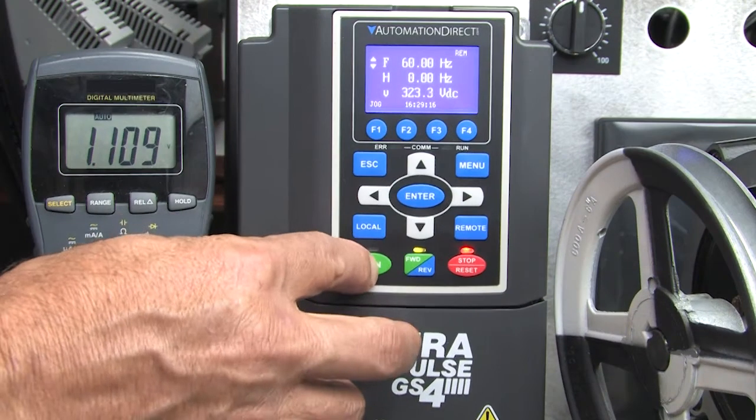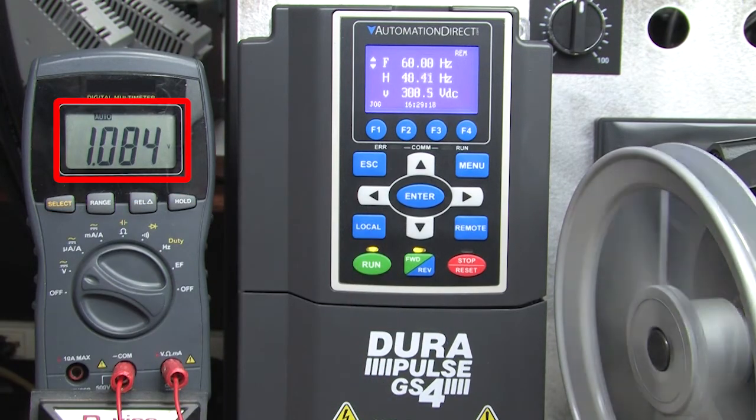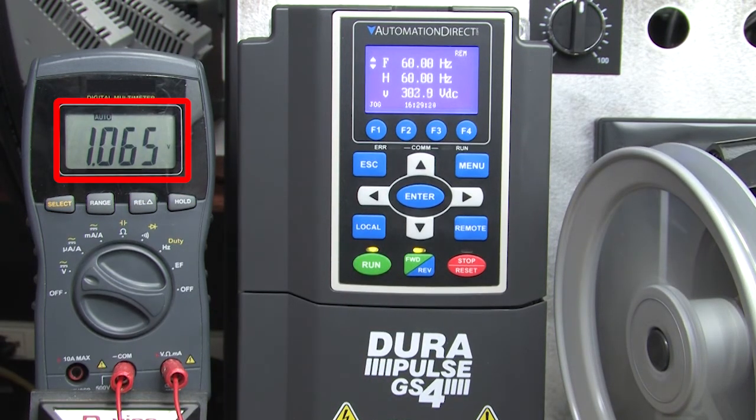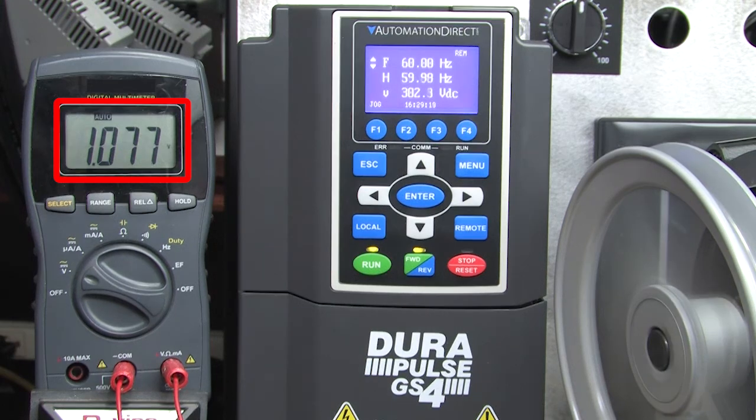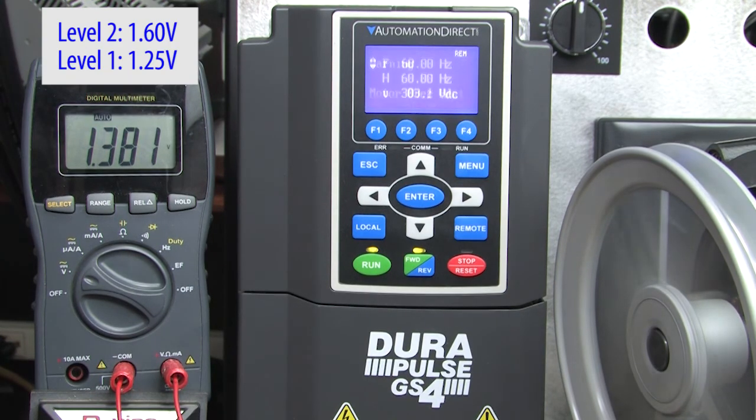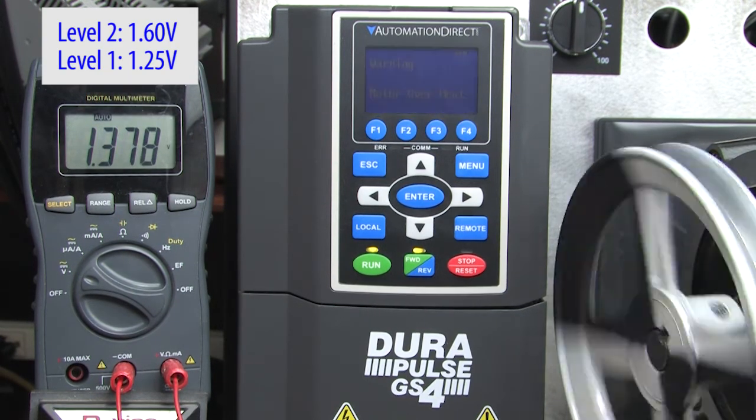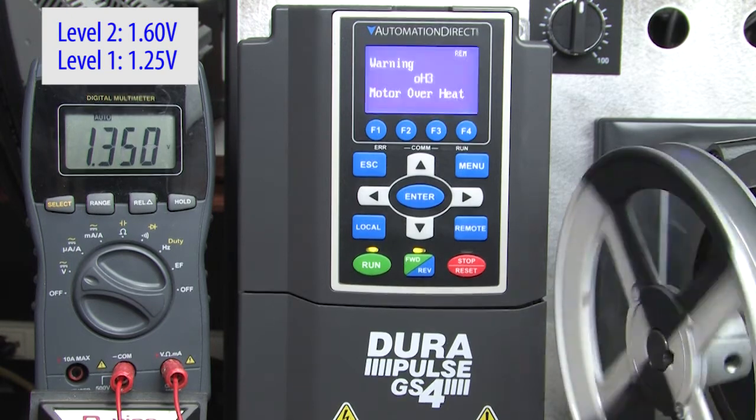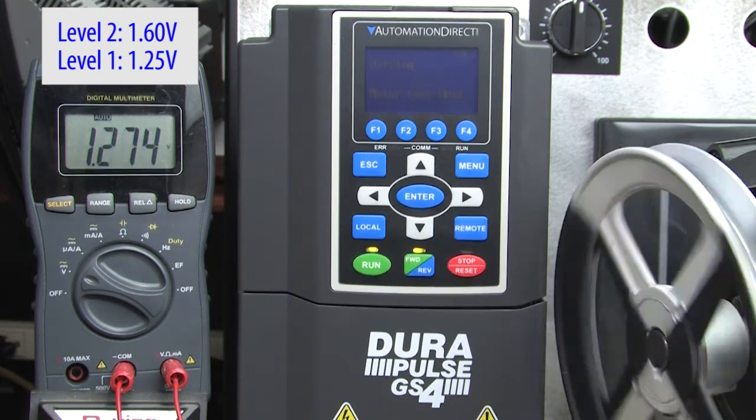OK, let's try it. I'll enable the motor and here's a volt meter that's across the RTD so we can keep an eye on the temperature generated voltage going into the drive. Here are the voltages for levels 1 and 2 that we just set a moment ago. I'll take a soldering iron and heat up the RTD. And sure enough, when we reach the level 1 voltage, the GS4 waits 5 seconds, then reduces the motor speed to the 2 Hz drop frequency we specified and generates an overheat fault in the drive.